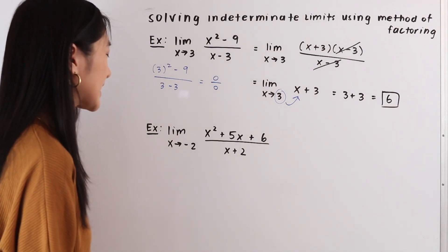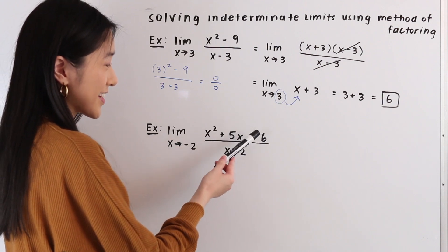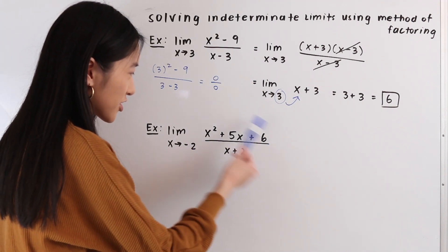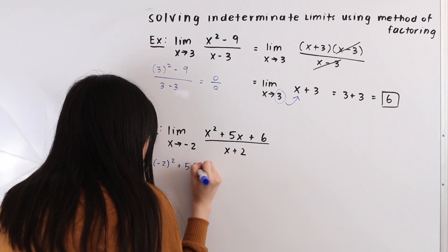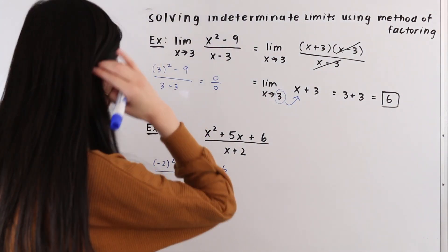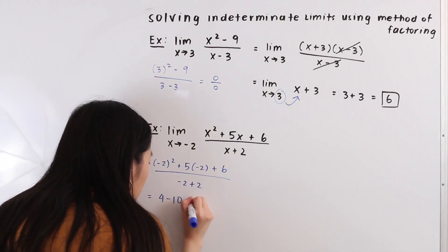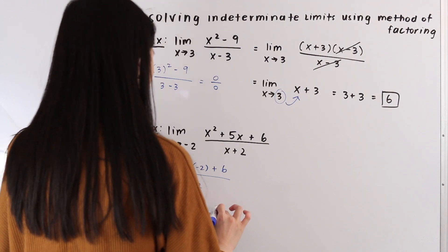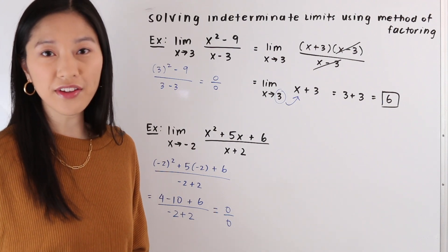Now let's take a look at the next example. We have the limit as x approaches negative 2 of the function x squared plus 5x plus 6 over x plus 2. The first thing we're going to do is plug in negative 2 for x. So we have negative 2 squared plus 5 times negative 2 plus 6, over negative 2 plus 2. The numerator simplifies to 4 minus 10 plus 6, and the denominator gives negative 2 plus 2, which simplifies down to 0 over 0 — an indeterminate form — meaning we need to use another method.